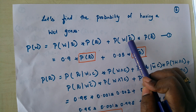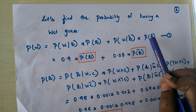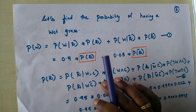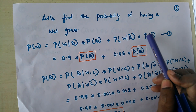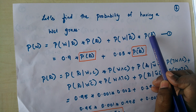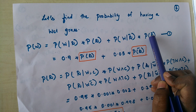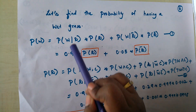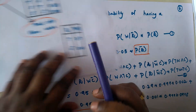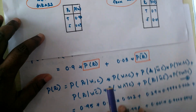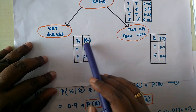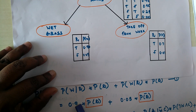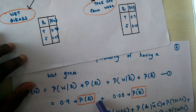The probability of rain and the probability of not getting rain need to be calculated separately, as they cannot be directly looked up from the conditional table. Filling in values from the figure: given rain is true, the probability of wet grass is 0.9, multiplied by the probability of rain, which we will calculate separately.